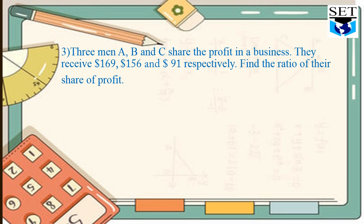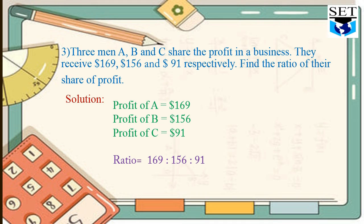Next question. Three men A, B and C share the profit in a business. They receive $169, $156 and $91 respectively. We have to find the ratio of their share of profit. Solution: First of all, we will look at what is given in the question. Profit of A: $169. Profit of B: $156. Profit of C: $91. So we will write their ratio as 169 to 156 to 91.